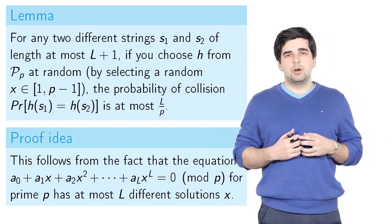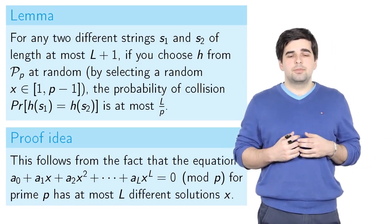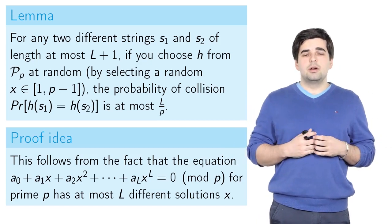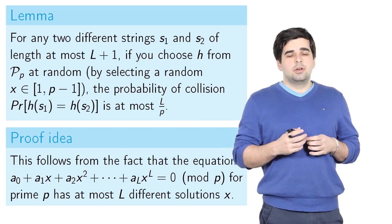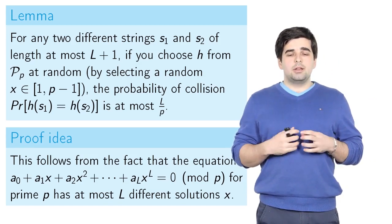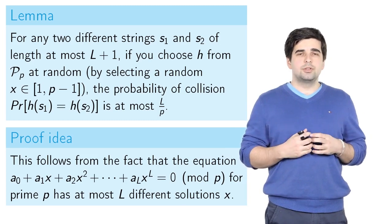The running time of this procedure is O(|s|)—it only depends on the length of the string, it doesn't depend on the length of number p. So if you select a really big number p, then the probability of collision will be very small and the hash function will still be computed very fast.